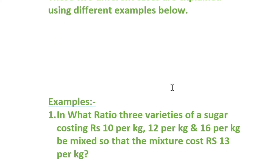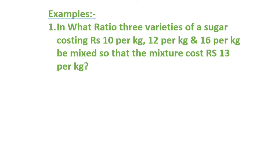The first question: In what ratio are varieties of sugar costing rupees 10 per kg, 12 per kg, and 16 per kg mixed so that the mixture costs rupees 13 per kg? This problem clearly contains three ingredients, so as told previously — x, y, z per kg — and the average price 'a' is 13.